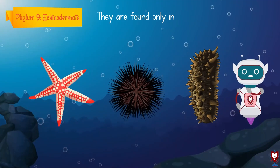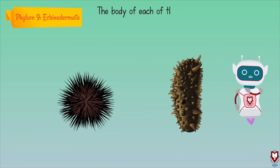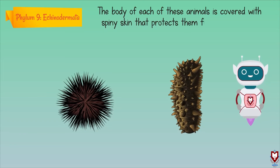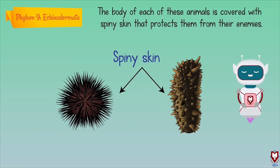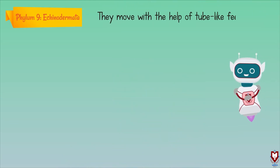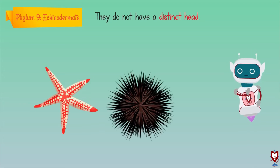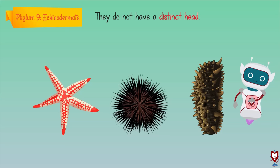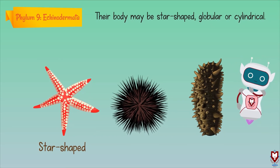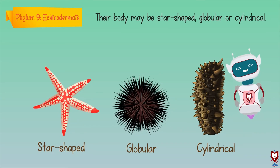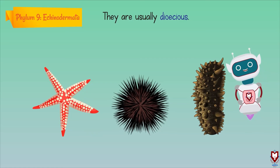They are found only in sea water or marine water. The body of each of these animals is covered with spiny skin that protects them from their enemies. They move with the help of tube-like feet. They do not have a distinct head. Their body may be star-shaped, globular, or cylindrical. They are usually dioecious, with male and female reproductive organs in separate bodies.